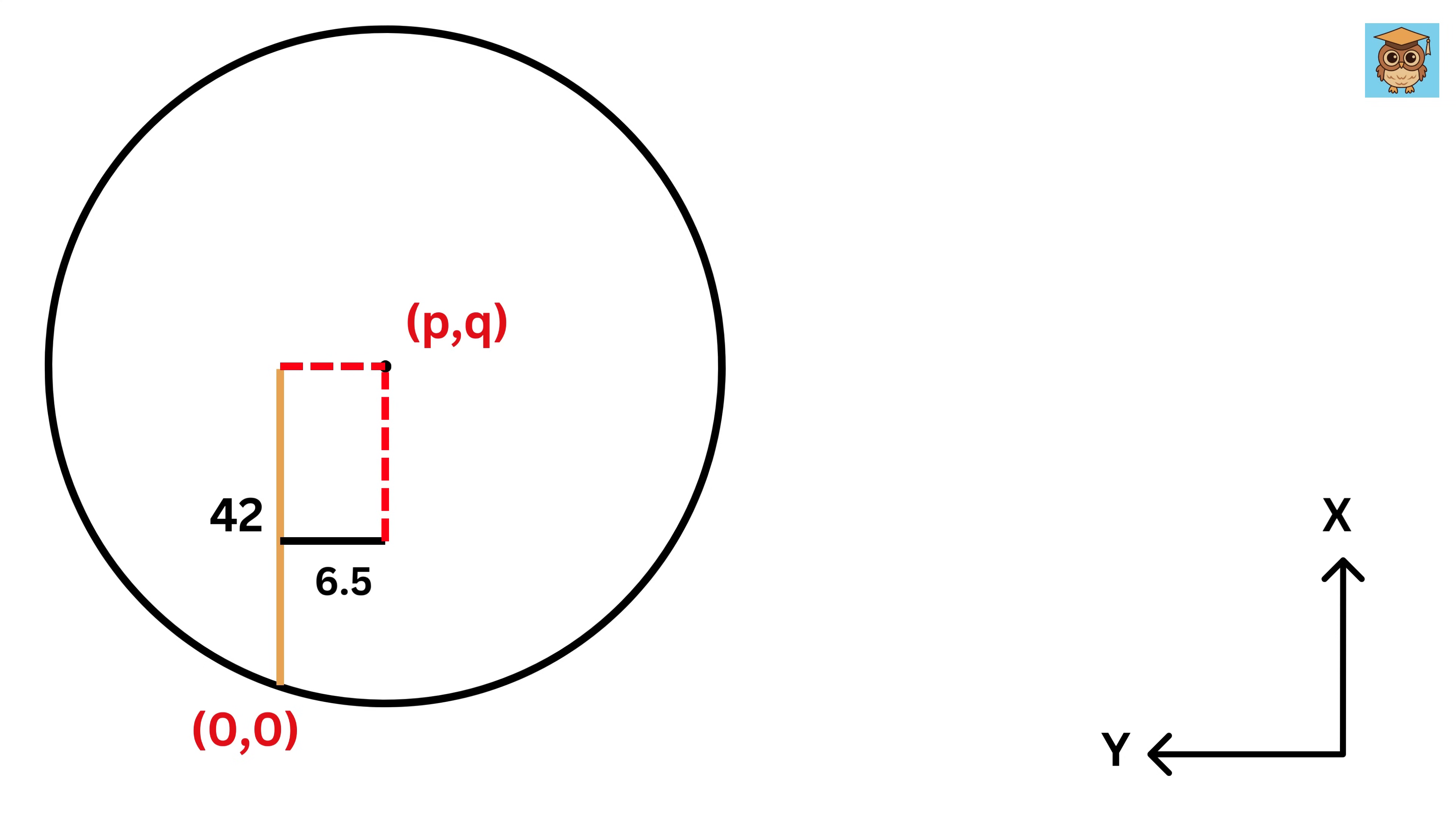Oh man, what do you observe? The value of P, or X coordinate of this center, is this, or 42 units, and the value of Q, or Y coordinate of this center, is this, or minus 6.5 units. Great.